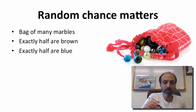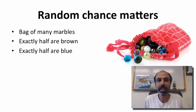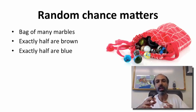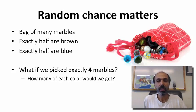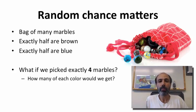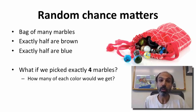Let me start with an analogy. Let's look at a bag of marbles. Let's imagine that you have brown marbles and blue marbles only in this bag, and exactly half the marbles in the bag are brown, exactly half are blue. Now what's going to happen is you're going to start a new bag of marbles. What if we start this new bag with exactly four marbles from the old bag? We just reach in and randomly pick out four. How many of each color would you get? Well you could get four blue, you could get four brown, you could get two blue and two brown.